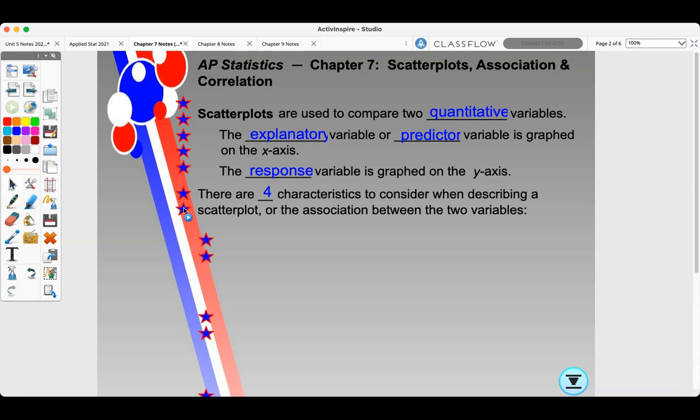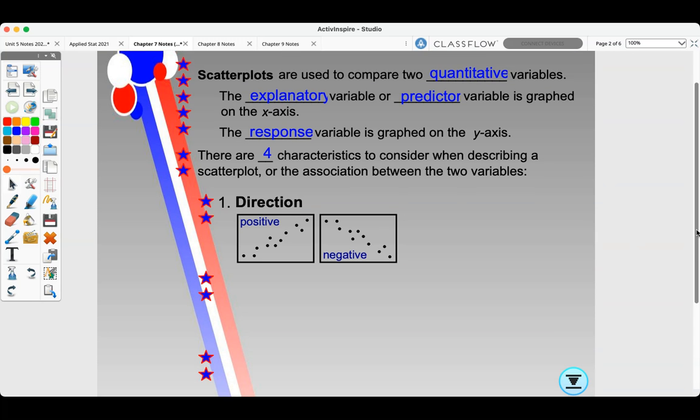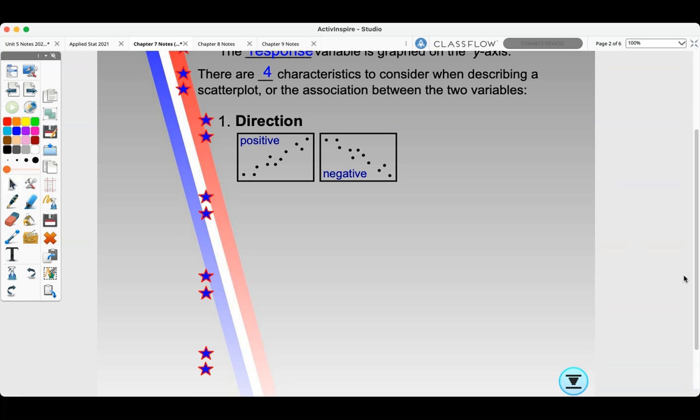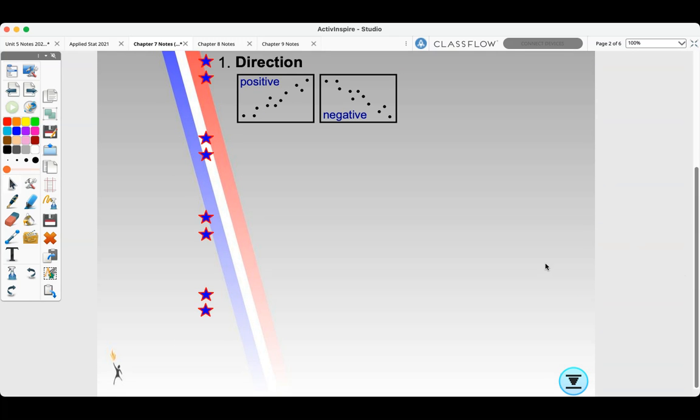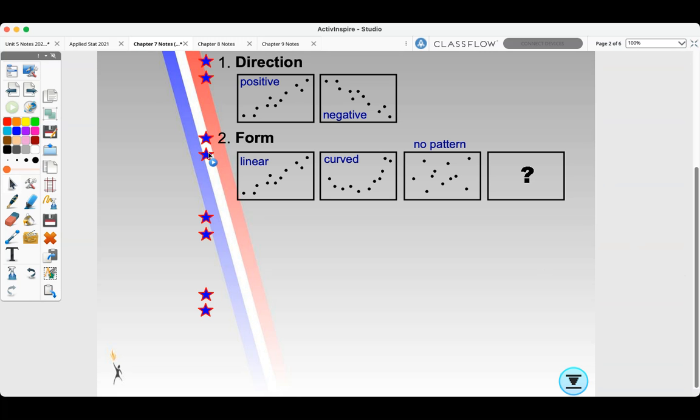There are four characteristics to consider when describing a scatterplot or the association between the two variables. First is the direction, positive and negative. Second is the form. Is it linear, curved, or is there no pattern?